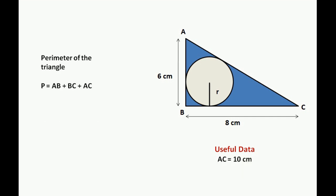The perimeter of the triangle is P equals AB plus BC plus AC. AB and BC are 6 and 8 cm, and AC was calculated as 10 cm. Therefore, the perimeter is 6 plus 8 plus 10, which equals 24 cm.